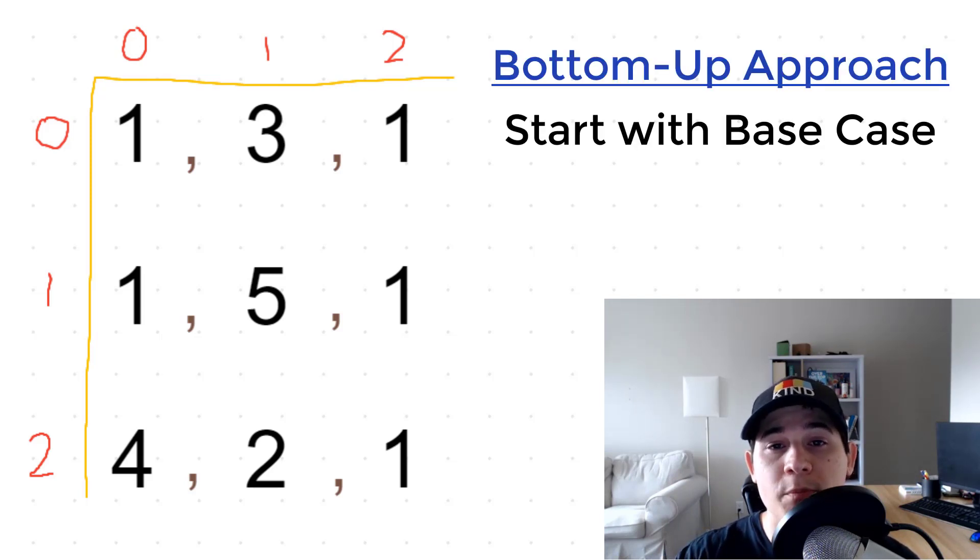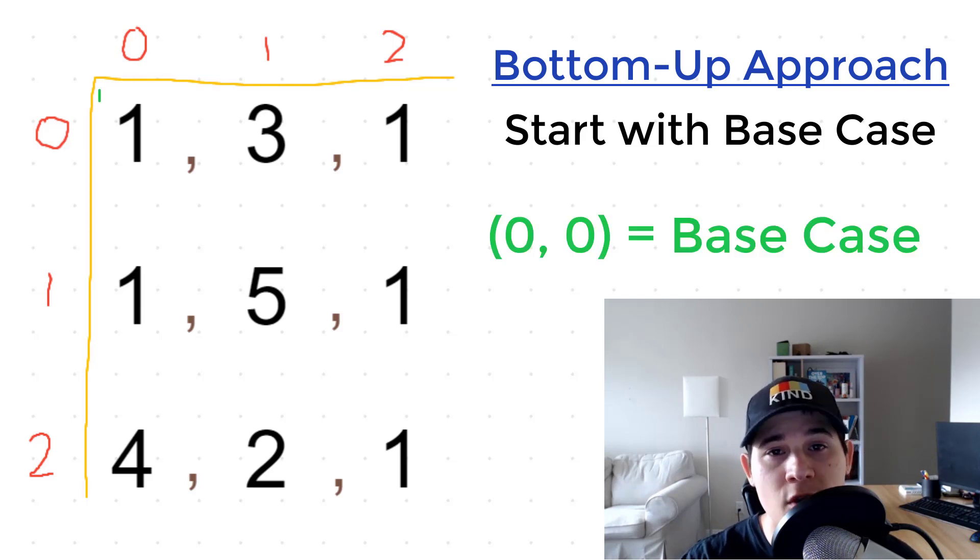So in this case, our base case is going to be solving the position (0, 0), what the minimum sum is up to that point. And then we're going to move our way through the array, and by the time we get to the bottom right, we will have our answer. So like I mentioned before, in order to know the minimum sum at every single position, we're going to look above us and to the left and get the minimum, and then add it to the current position we're looking at. So let me write this out in a recurrence relation.